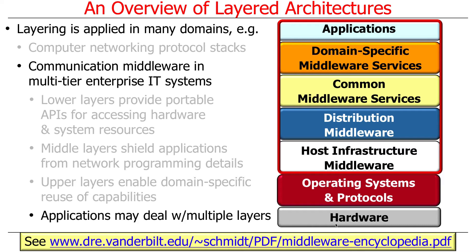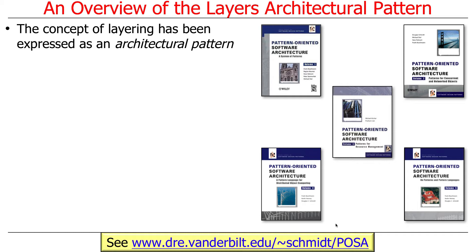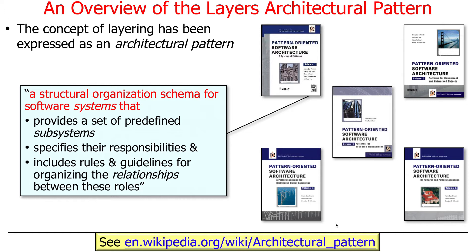Layering is very ubiquitous — you'll find it almost everywhere. It's so common that people have documented it as a pattern. We've talked about patterns before: Observer, Proxy, Template Method, Bridge. Layers is also an architectural pattern; it appeared in the Pattern-Oriented Software Architecture series. Basically, it provides a structural organization schema for software systems that defines a set of predefined subsystems, specifies their responsibilities — what capabilities they provide, what they expect from things below them, what they provide to things above them — and rules for organizing the relationships between these roles at different levels of abstraction.